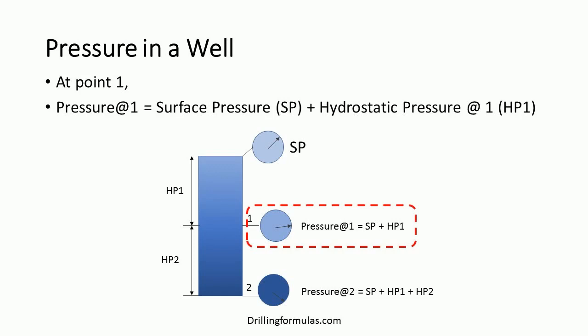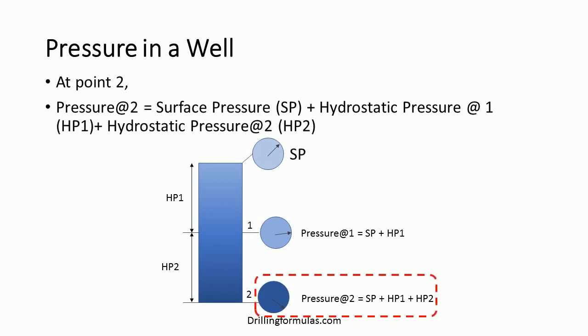At point number 1, pressure is equal to surface pressure plus hydrostatic pressure at point number 1. At point number 2, pressure is equal to surface pressure, plus hydrostatic pressure at point number 1, plus hydrostatic pressure at point number 2.